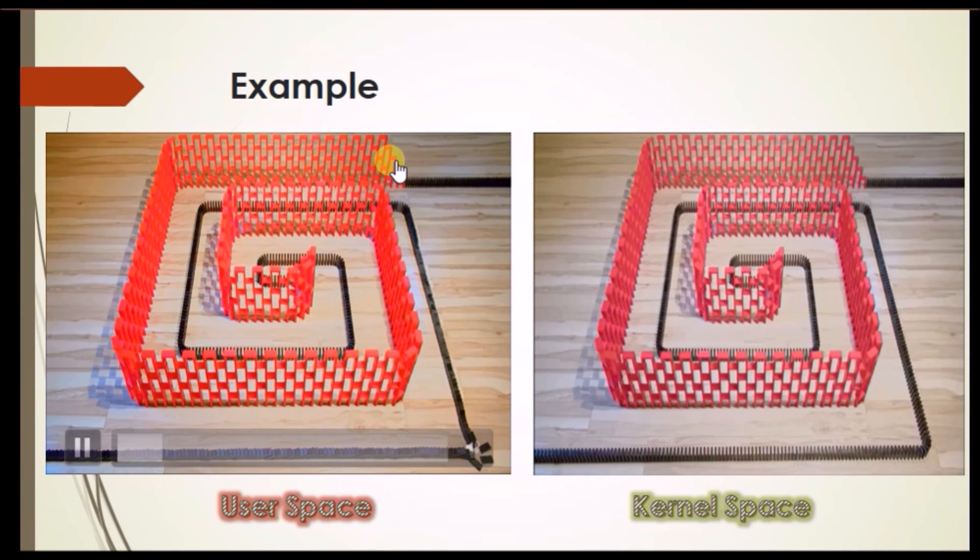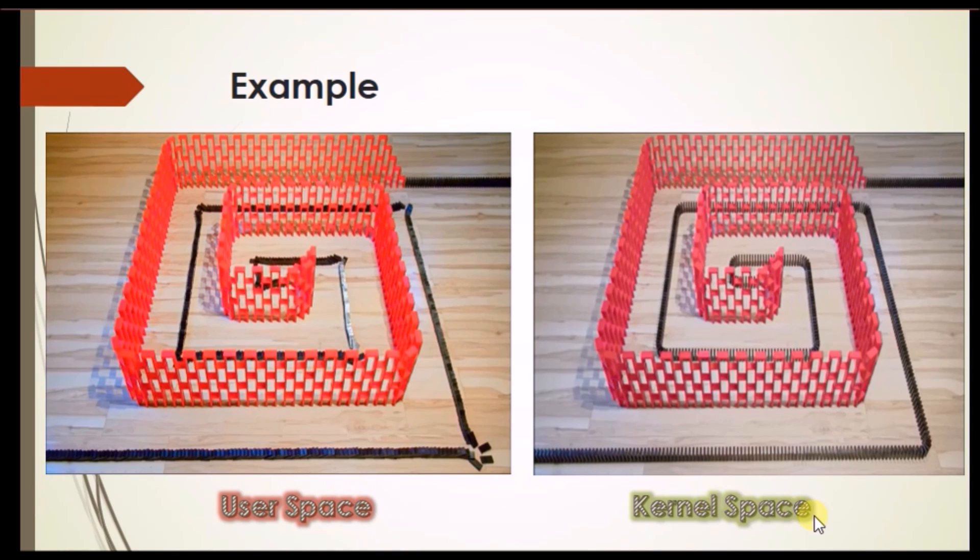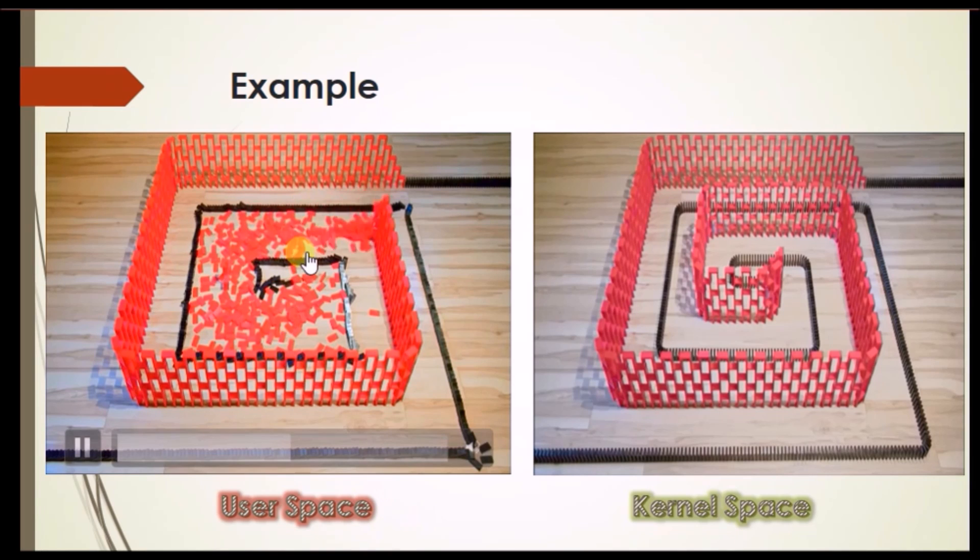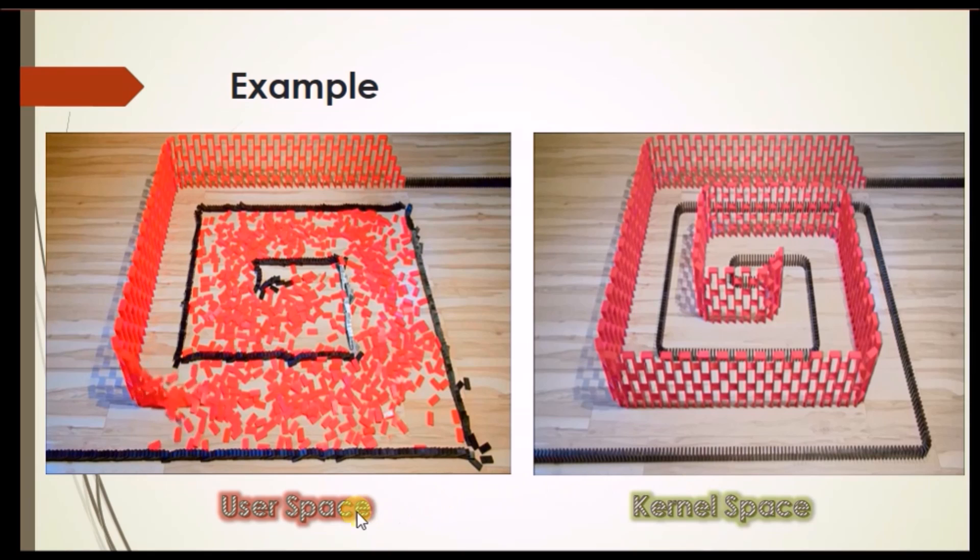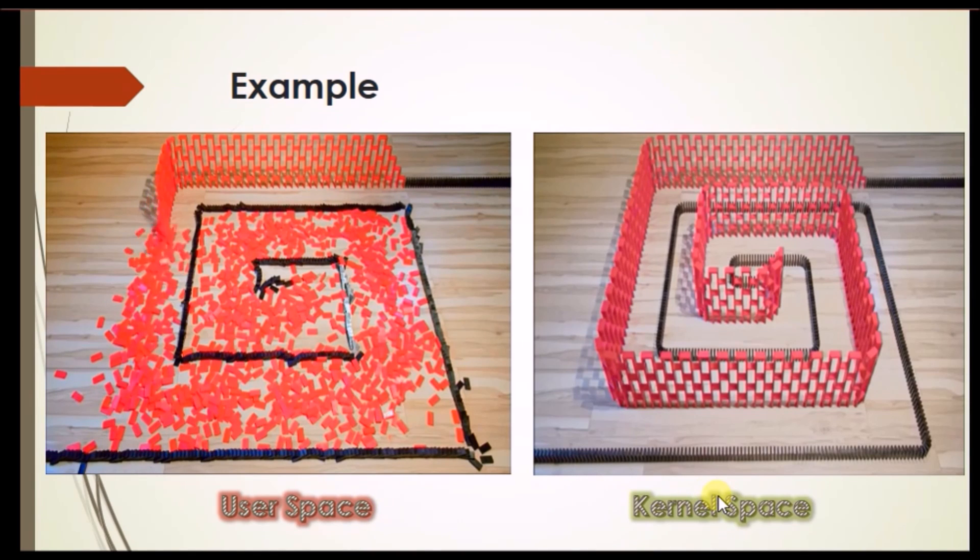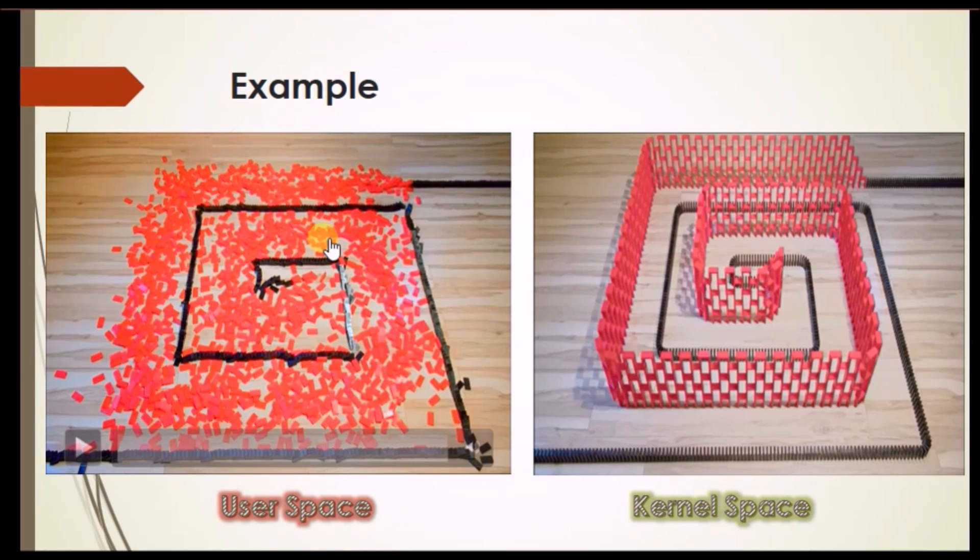Let's see with the example. This is user space and this is kernel space. If user space catches any bug, it will not affect the kernel space. And once service fails, the other one still works. As we can see that in these dominoes, in user space, if one domino falls down, it will not affect the kernel space dominoes.